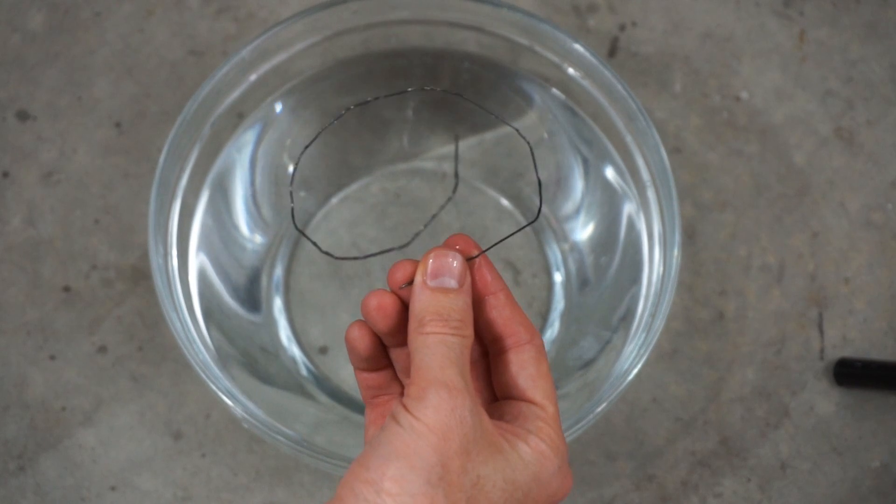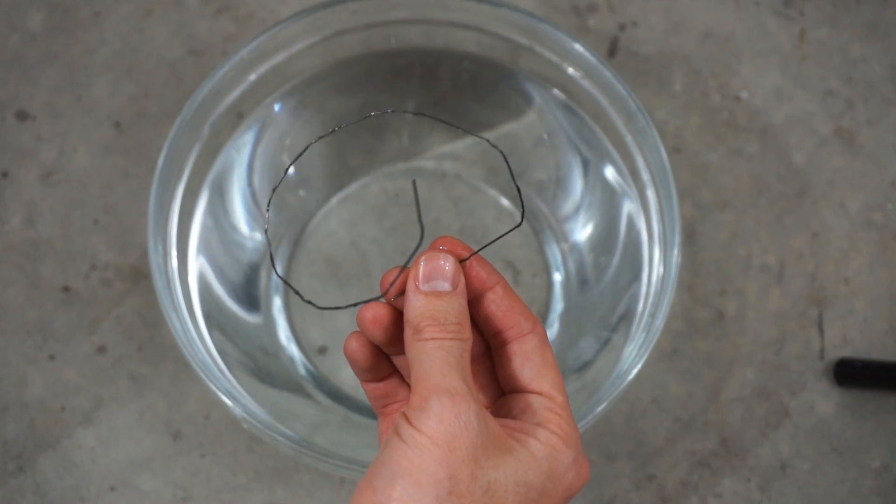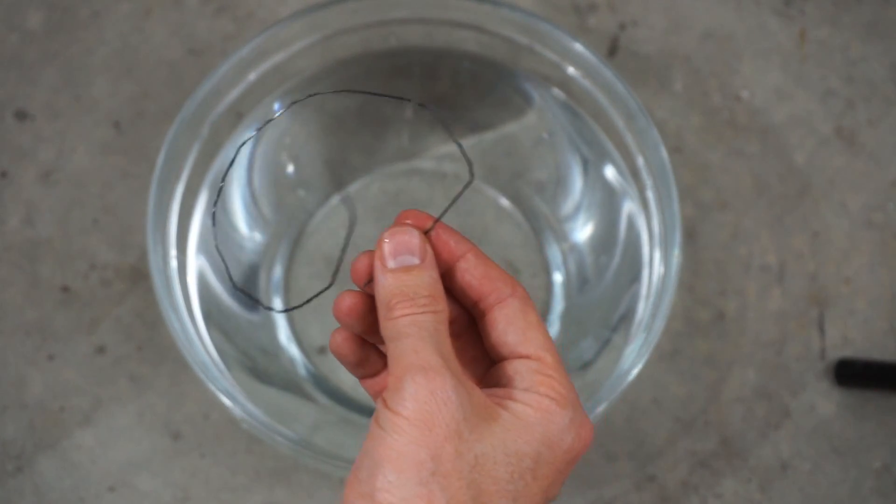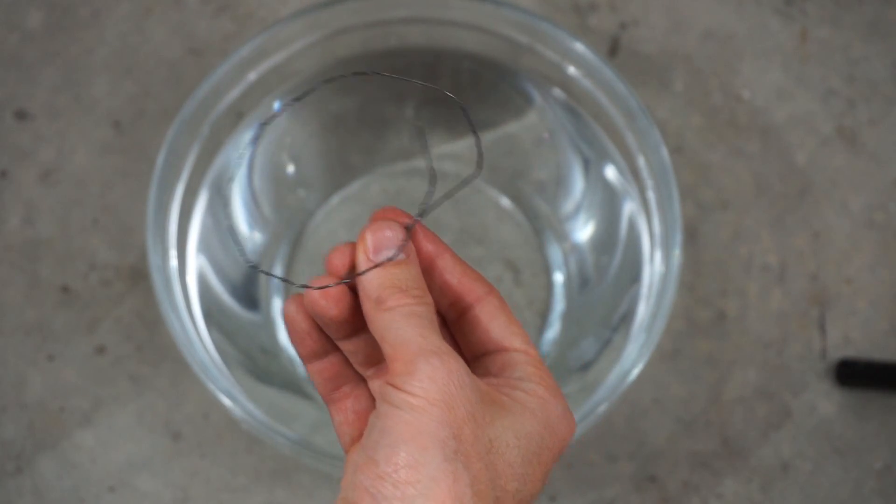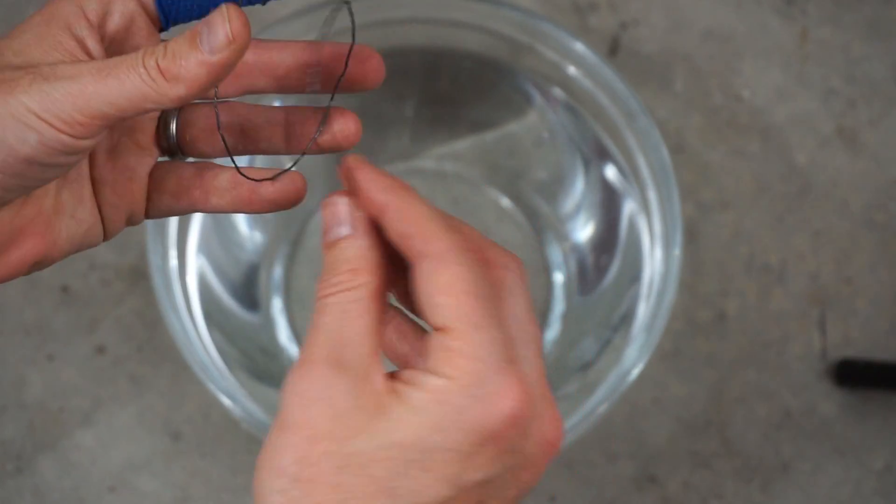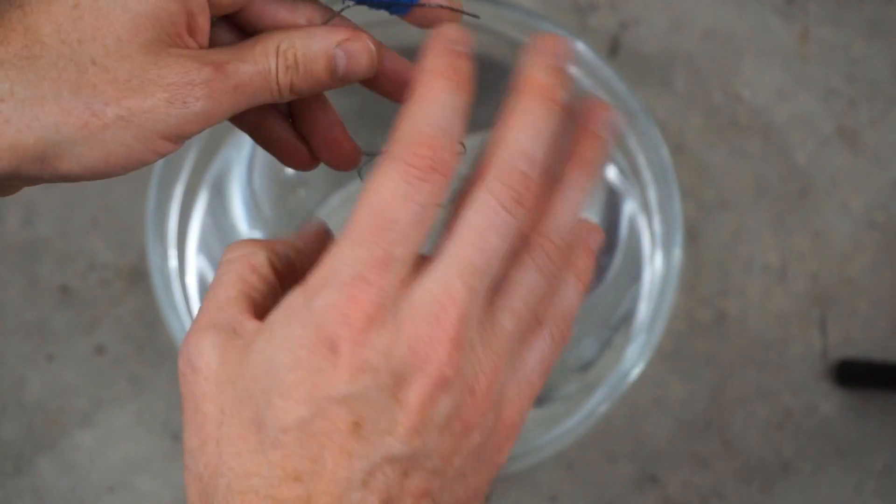So normally with nitinol, if you heat it up, you can get it to form a new shape. So you can choose what shape you want it to be in when you heat it up. But it looks like also, if you apply a lot of pressure to it, you can make it form a new shape.